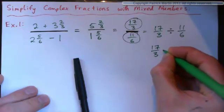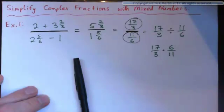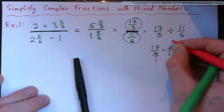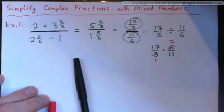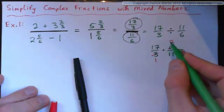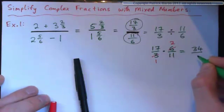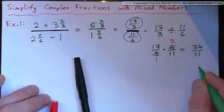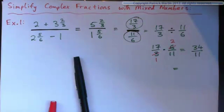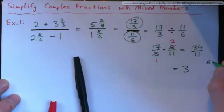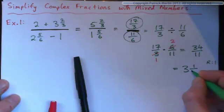So this is the same as 17 thirds divided by 11 sixths, which means 17 thirds multiplied by 6 over 11. Does anything cross-cancel? 3 into 3 goes once, and 3 into 6 goes twice. So we get 17 times 2 on top — that's 34 — and 1 times 11 on the bottom — that's 11. So 34 over 11 as an improper fraction. As a mixed number: 11 into 34 goes 3 times remainder 1, so the answer is 3 and 1 eleventh.